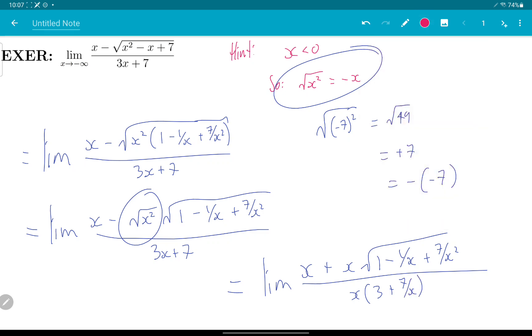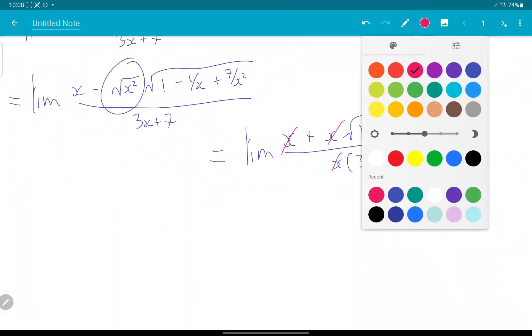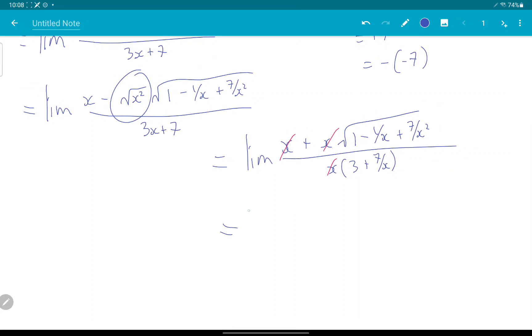Okay, now I can cancel my axes here, giving me limit 1 plus root all over 3 plus 7 over x.